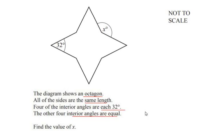So here they have said that the shape given is an octagon. Octagon is a polygon having eight sides. So this is side one, two, three, four, five, six, seven, eight.